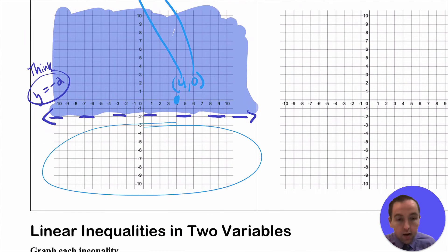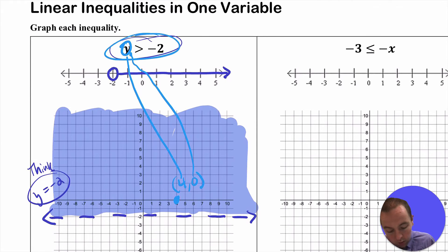Down here, all of your y values are actually less than negative 2, so hence we don't have that shaded. So that's how we would go about graphing that linear inequality in two dimensions then.